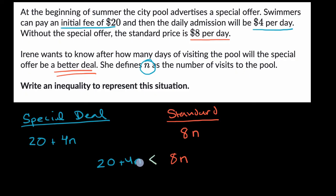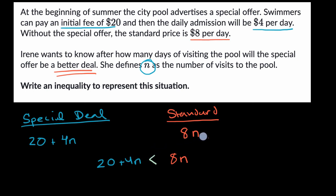We could try to simplify or even solve this inequality, but this is all we wanted — just an inequality to represent the situation. You can see here, if Irene visited zero days, 20 is not less than zero, so zero days means the special deal is not a better scenario. You're going to have to figure out after how many days it starts to become a better scenario. If she visits enough, it will be, and you could figure that out by simplifying this.